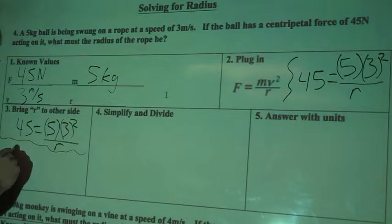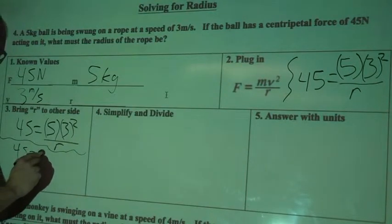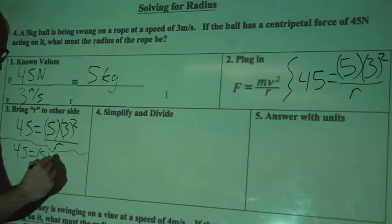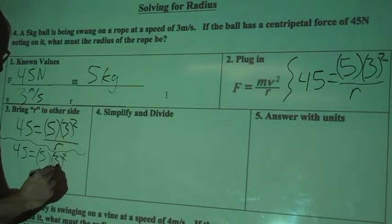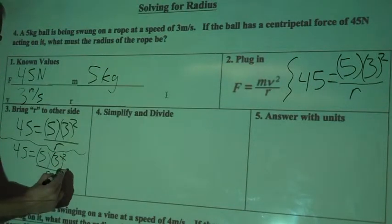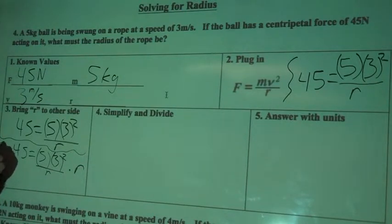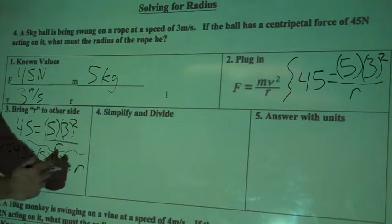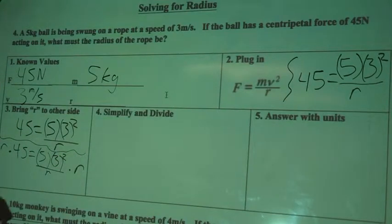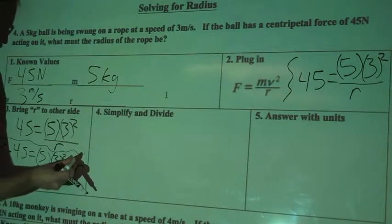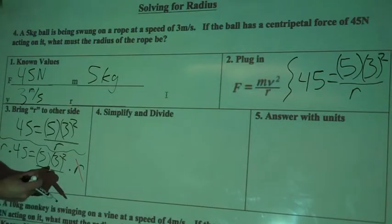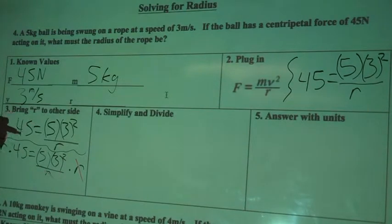So I'm going to rewrite everything I have here. I'm going to have 45 equals 5 times 3 squared divided by R. And I'm going to multiply on this side times R, and on this side times R. What's going to happen to these two R's? These R's are going to cancel out. One is in the numerator now, one is in the denominator.